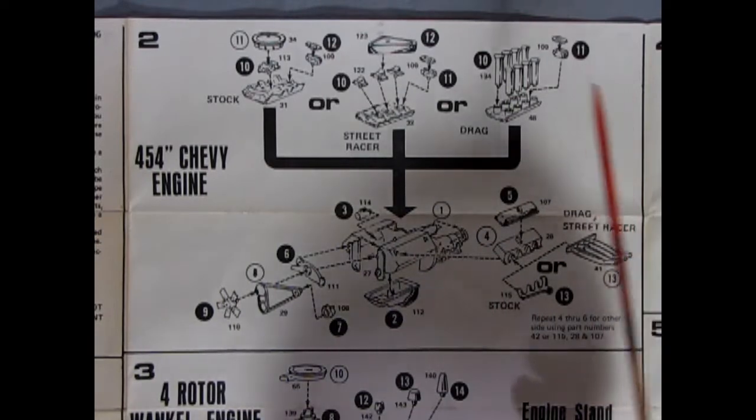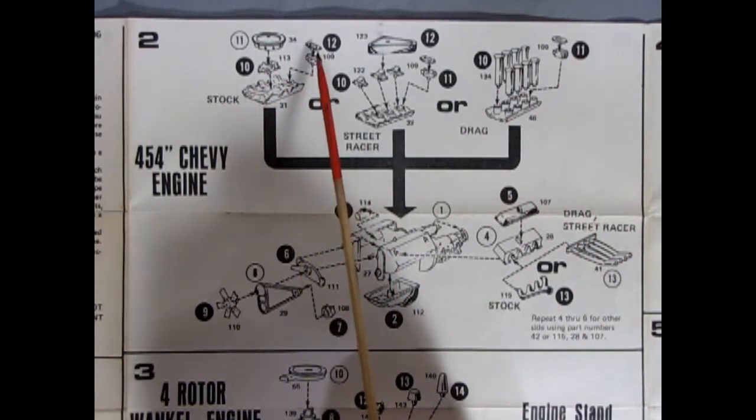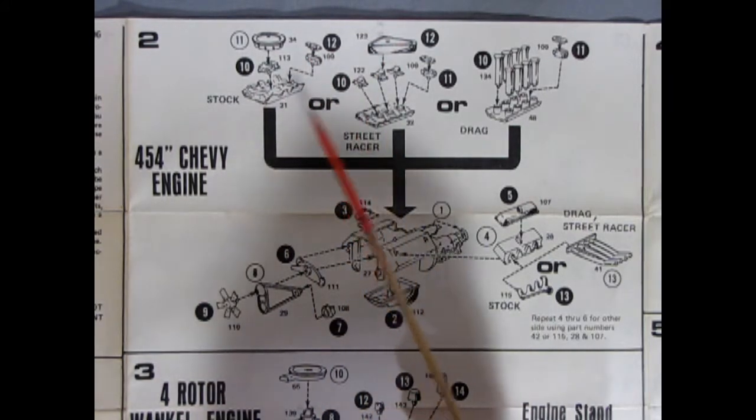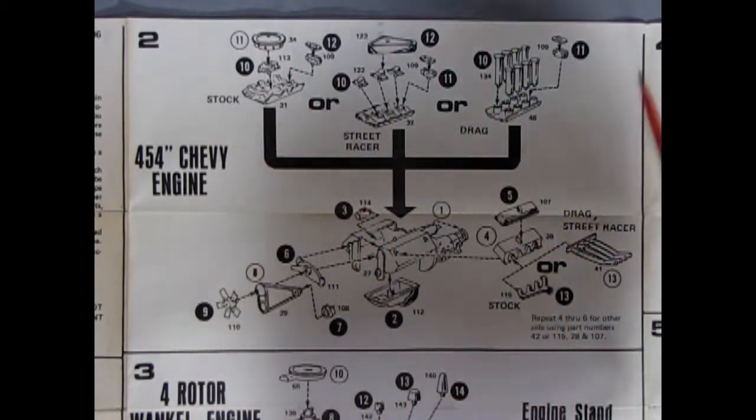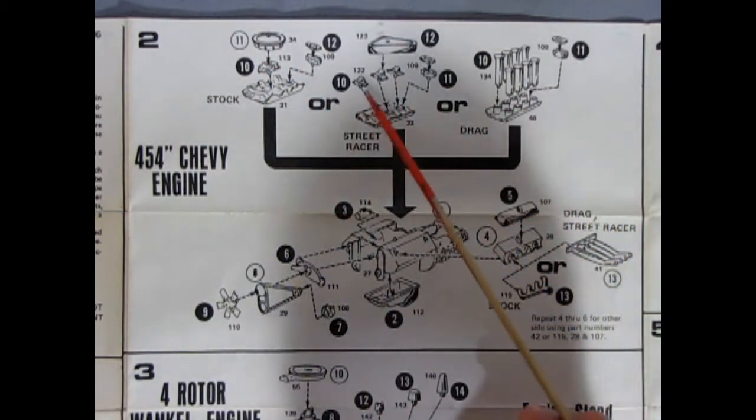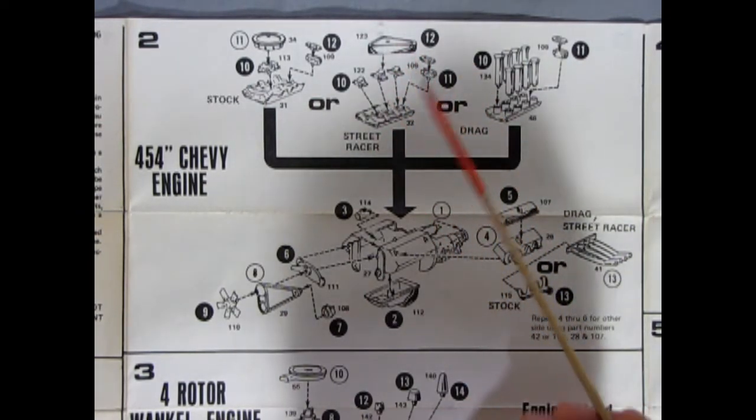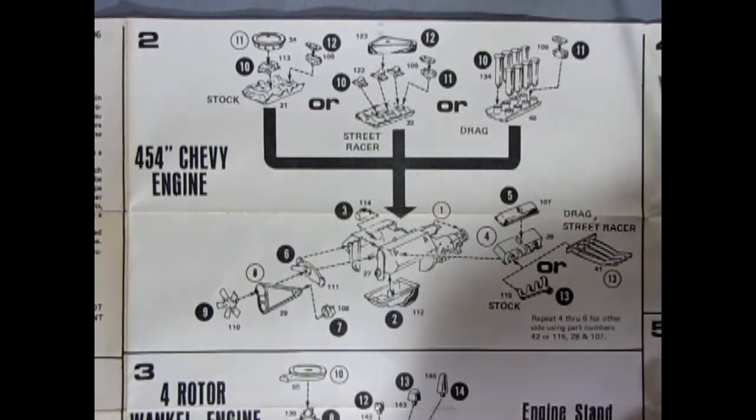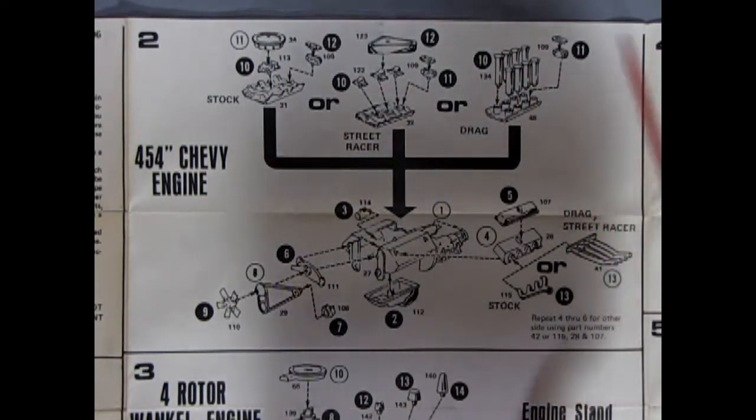Continuing on, we do have our stock air cleaner, our four barrel carburetor, and our distributor in two pieces because it's shielded being on a fiberglass car. Then our intake manifold for the stock, our street racer has the tri carbs and the triangular air cleaner which was more of a late 60s early 70s style setup, and then we've got this nice drag racing one with velocity stacks going into the special manifold.